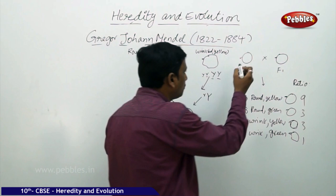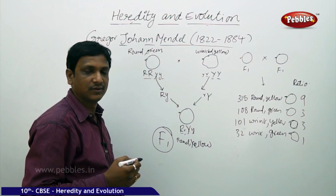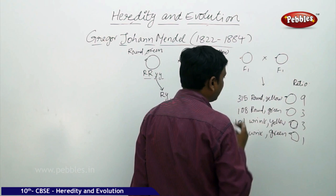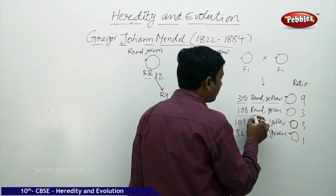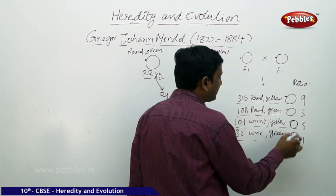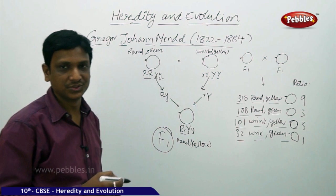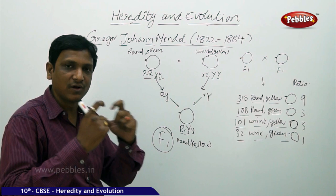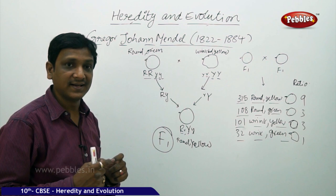Now two same F1 seeds are cross-pollinated and cross-fertilized. Cross-breeding takes place between F1 and F1. The result is: we get 315 round yellow seeds, 108 round green seeds, 101 wrinkled yellow seeds, and 32 wrinkled green seeds. The ratio is 9:3:3:1. This shows that the characters are independently inherited — roundness and greenness are not linked.